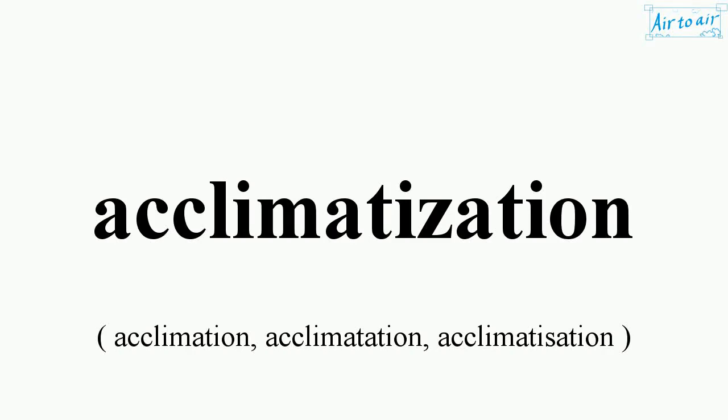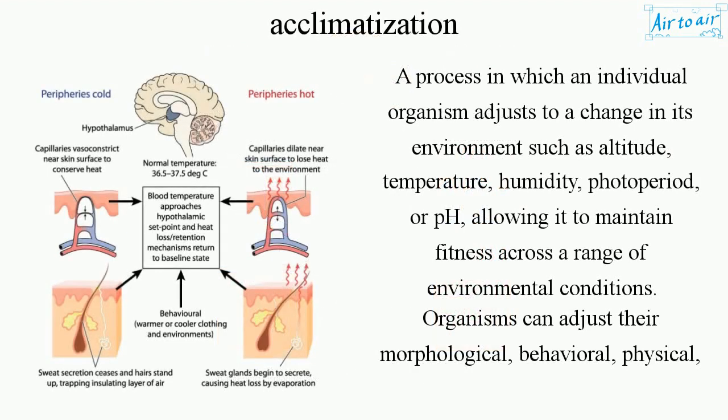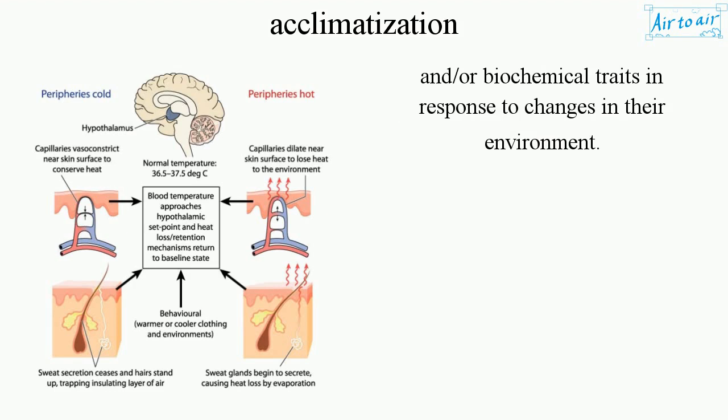Acclimatization: a process in which an individual organism adjusts to a change in its environment, such as altitude, temperature, humidity, photoperiod, or pH, allowing it to maintain fitness across a range of environmental conditions. Organisms can adjust their morphological, behavioral, physical, and/or biochemical traits in response to changes in their environment.